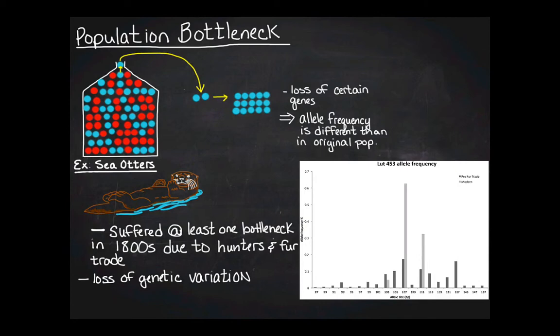So if you look at this graph, this is the LUT-453 allele frequency, which is a mitochondrial DNA allele. On your y-axis, you have allele frequency in percent. And then you have the actual size of the allele. So it's just showing you the different possible alleles, the different variations that you see at this particular location in the population. And the dark gray bars are before the fur trade decimated the sea otter population. And the light gray bars are after fur trade. And you can see that the dark gray bars before the fur trade, there were 20 alleles present in this population. And post fur trade, there's three alleles. So you're seeing a loss of genetic variation due to this population bottleneck.